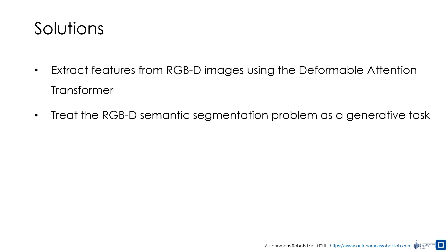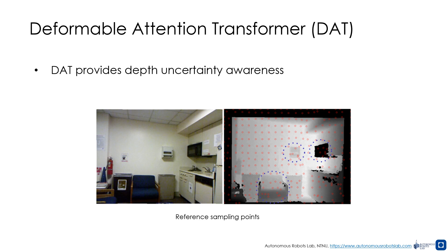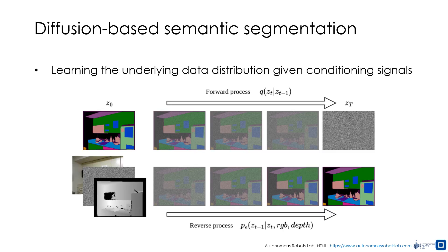We show that using the deformable attention transformer to extract features from RGBD images improves RGBD representation even with noisy depth data. Moreover, we shift the task from discriminative prediction to generative modeling. The deformable attention transformer adapts to relevant spatial points across scales, leading to efficient attention. Learned reference points shift toward key regions, treating invalid areas such as reflective surfaces as whole objects, thus avoiding noise overfitting. We reformulate RGBD semantic segmentation as a generative modeling task using diffusion models.